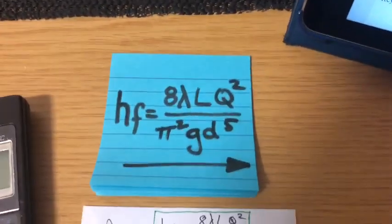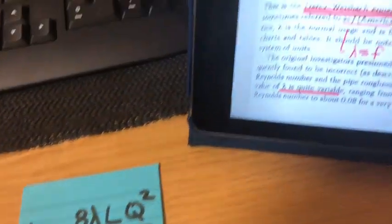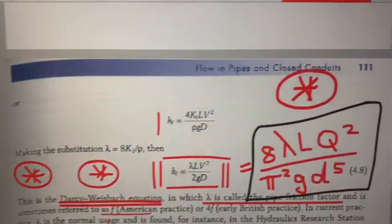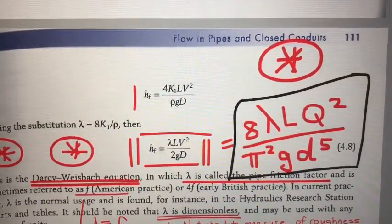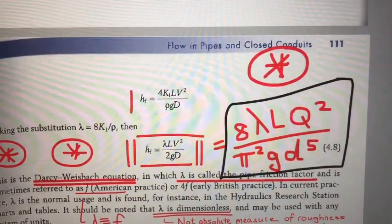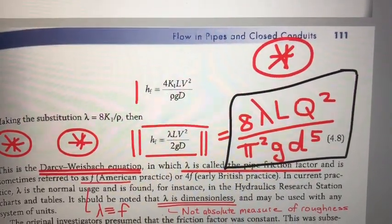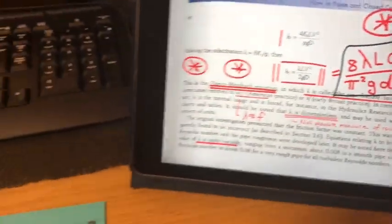First, of course, we need the equation. You will find that on page 111 of the hydraulics textbook, the Darcy Weisbach equation. The HF can be calculated in terms of velocity or Q. In this case we are using Q.